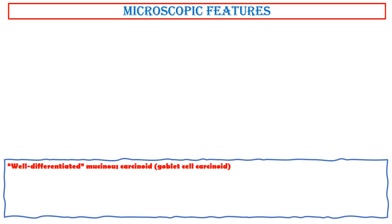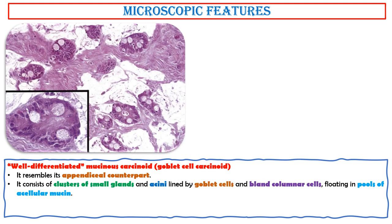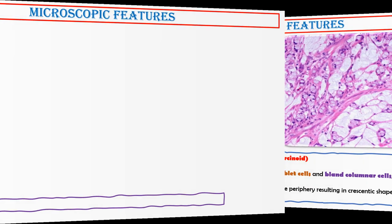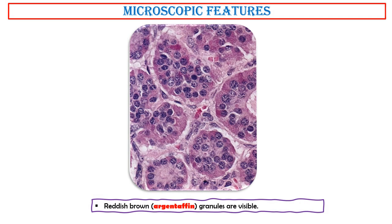Well-differentiated mucinous carcinoid, or goblet cell carcinoid, resembles its appendiceal counterpart. It consists of clusters of small glands and acini lined by goblet cells and bland columnar cells floating in pools of acellular mucin. The nuclei of the tumor cells are compressed and pushed to the periphery, resulting in a crescentic shape and imparting a signet ring cell appearance. Reddish-brown argentaffin granules are visible in this photo.